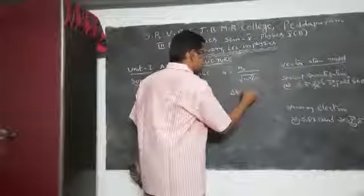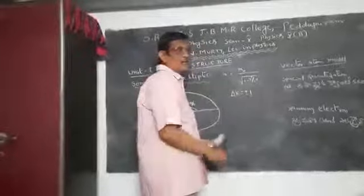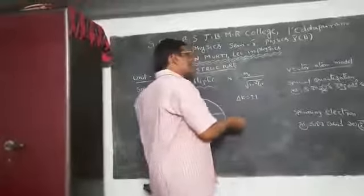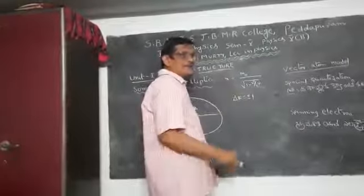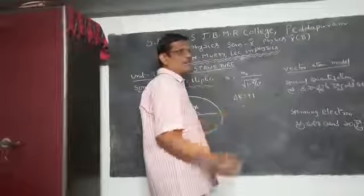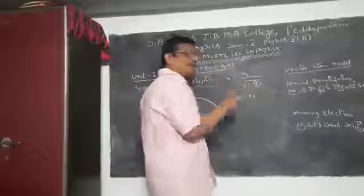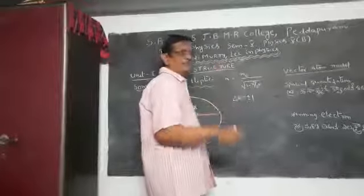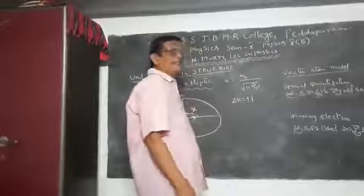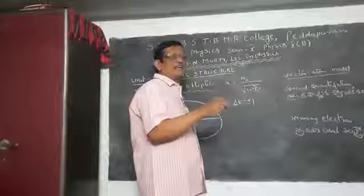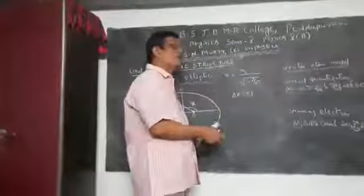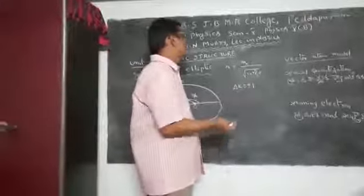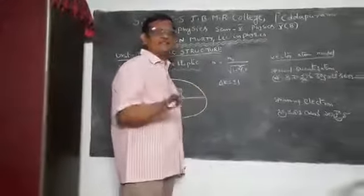K is equal to plus or minus 1. By using all these conditions, he is unable to fully explain the drawbacks of Bohr's theory, but he is successful to some extent. He is able to explain the fine structure of spectral lines up to some extent, but not 100%.